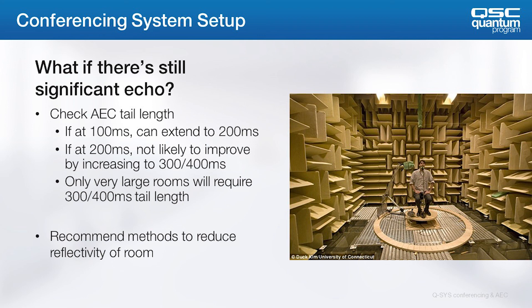If you're using the 100 millisecond tail length, it's very possible you'll need to extend to 200 milliseconds. The 200 millisecond algorithm can handle about 85% of conference rooms, but if the room is very large and very reflective, it might require 300 or 400 millisecond tail lengths. Remember, the longer the tail length, the fewer algorithms can fit in a given core. The eternal struggle is that architects and end users love elaborate room shapes made of very reflective surfaces — glass, hardwoods, and ceramic tile are not the greatest environment for conferencing. In some cases, it's necessary to propose acoustic treatment to absorb some reflections and provide the best intelligibility and response.